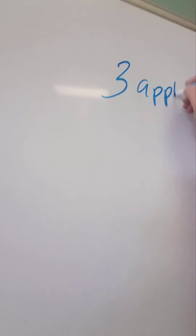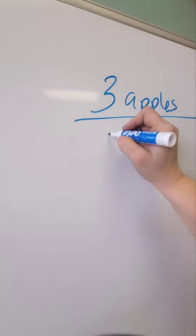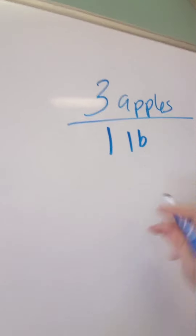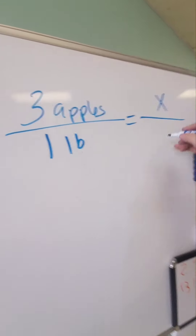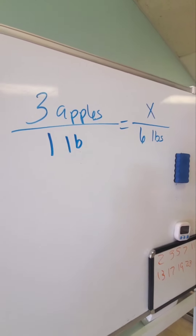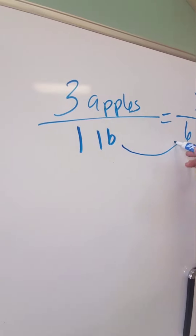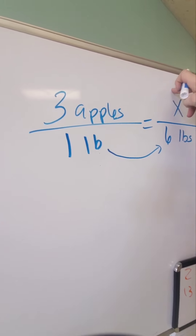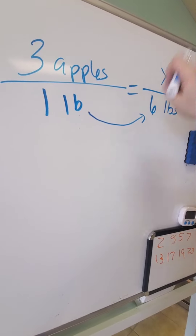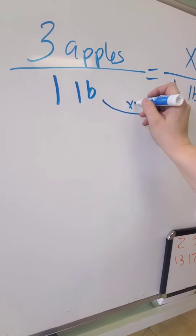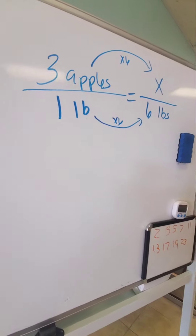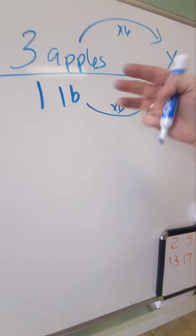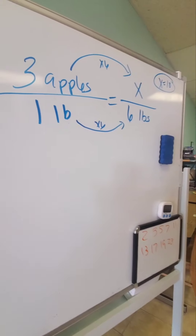So these are like a big puzzle, and they all work together. If 3 apples weigh 1 pound, and I want to know how many apples I have if I have 6 pounds — lots of places do things by weight. From here to here, 1 times 6 is 6, so 3 times 6 is x. 3 times 6 is 18, so x equals 18.